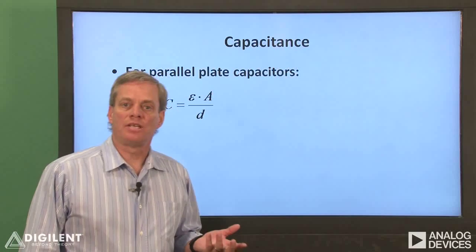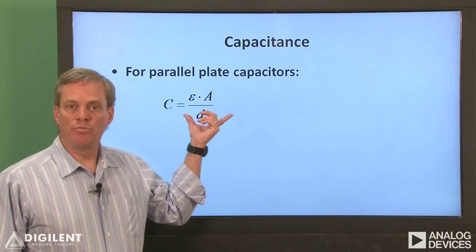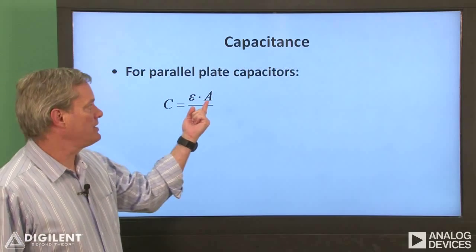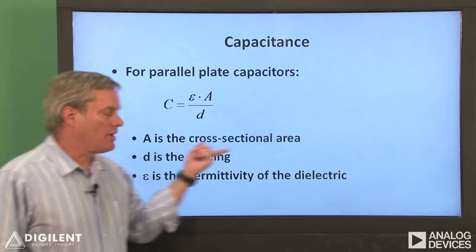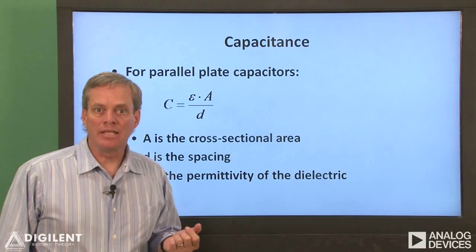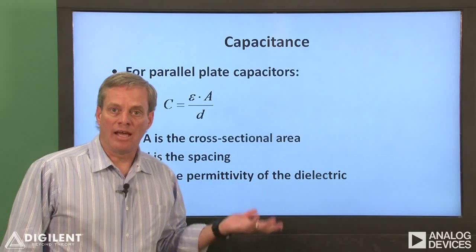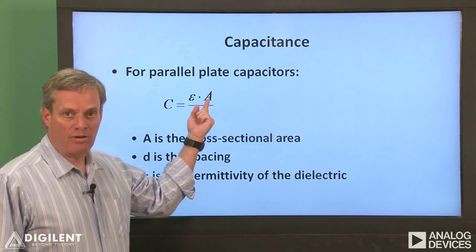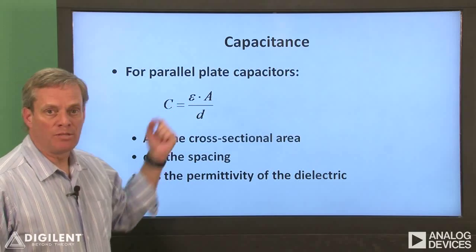Capacitance is a quantity which tells us how much energy a capacitor can store. For a capacitor consisting of two parallel plates, the capacitance is A times epsilon over D, where A is the cross-sectional area of the plates, D is the spacing between the plates, and epsilon is the permittivity of the dielectric. So we can increase capacitance by increasing the cross-sectional area, decreasing the spacing, or increasing the permittivity.